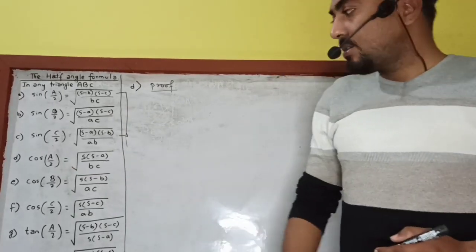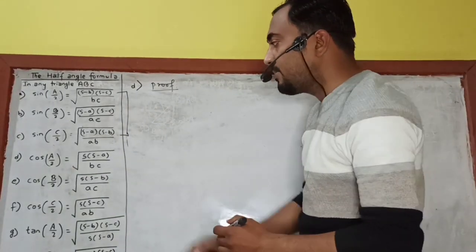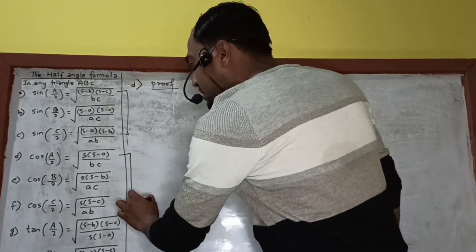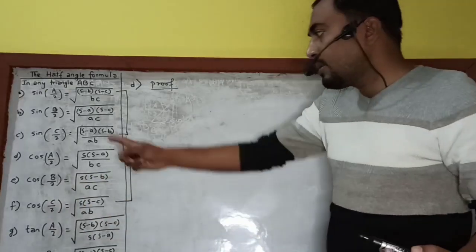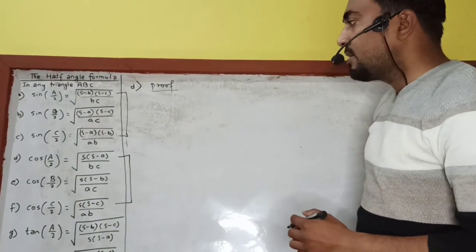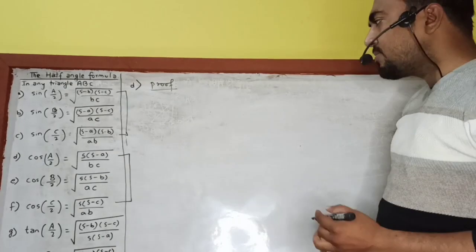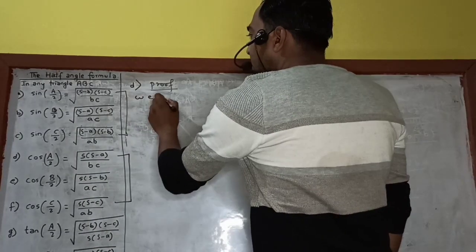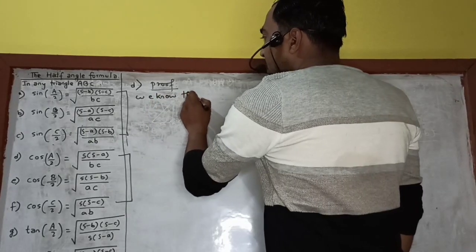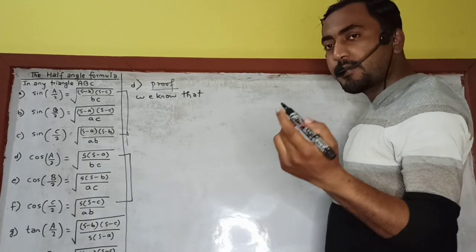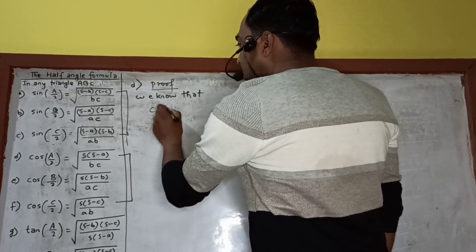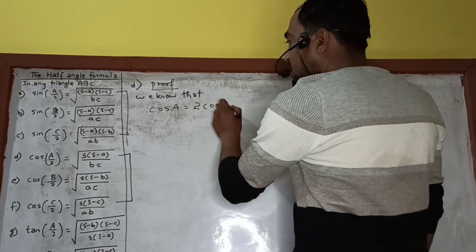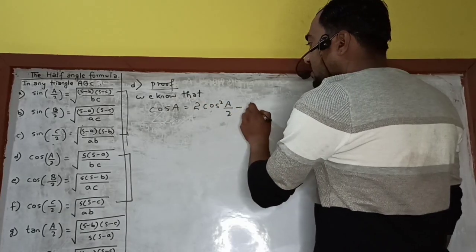Now let's prove statement D — cos(A/2). If I prove one, the remaining two you can prove yourself using the same pattern. So using the half-angle formula: cos A = 2 cos²(A/2) − 1. From here, 2 cos²(A/2) is equal to 1 + cos A.